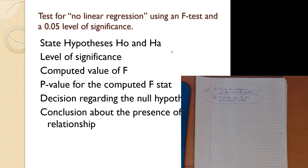So we've got our six steps: HO and HA, alpha, the test statistic itself — which is very easy, it's right there on the output — a p-value for the test statistic, again right there on the output, then we make that decision using the rule, and step five is make the decision and the conclusion: is the model significant or is the model not significant?